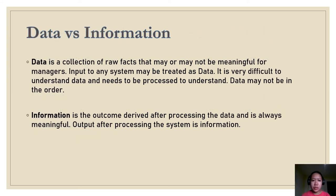Data versus information: by definition, data is a collection of raw facts that may or may not be meaningful for managers — input to any system may be treated as data, and data needs to be processed to be understood. Information is the outcome derived after processing the data and is always meaningful — the output of the processing system is called information. For example, researchers conducting a market research survey might ask members of the public to complete questionnaires about a product or service. These completed questionnaires are data; after processing and analysis, the resulting report is called information.